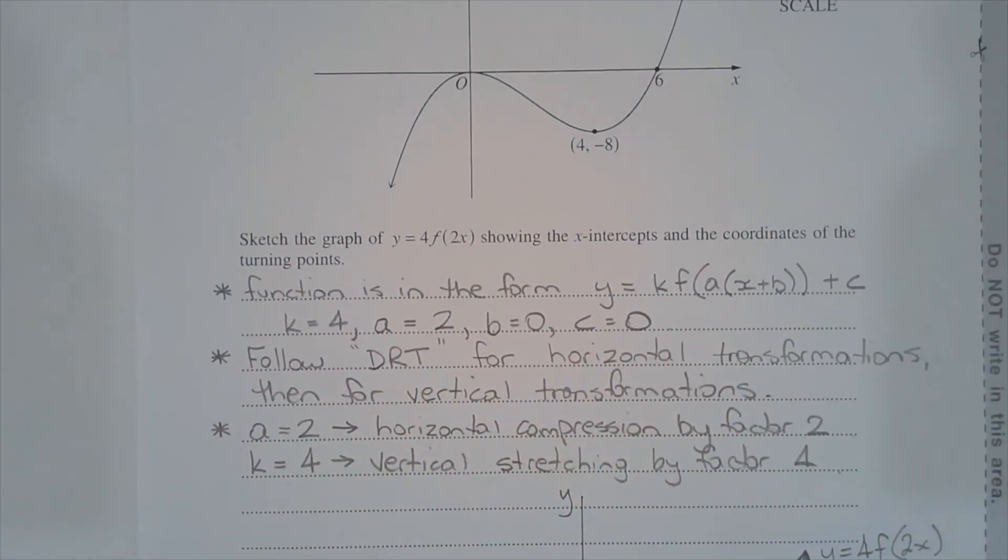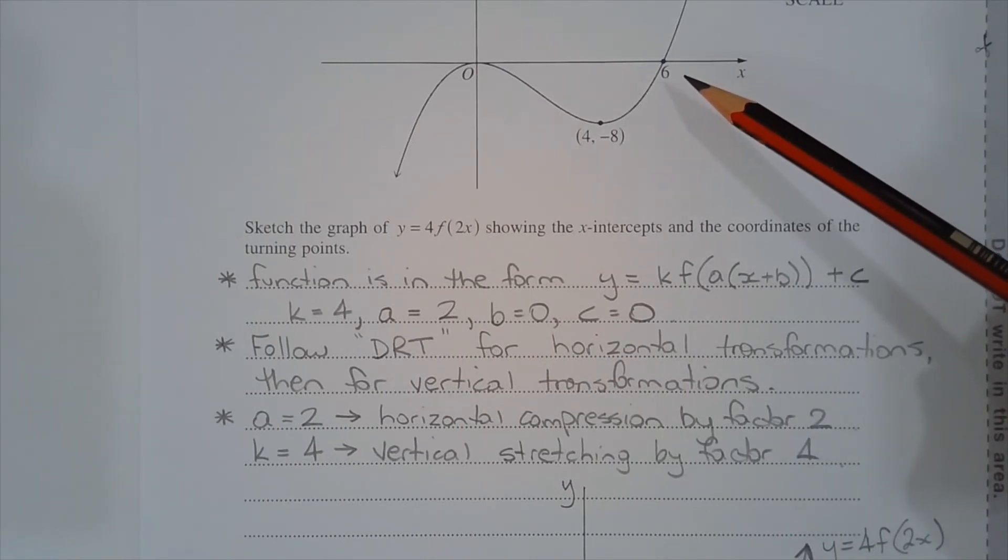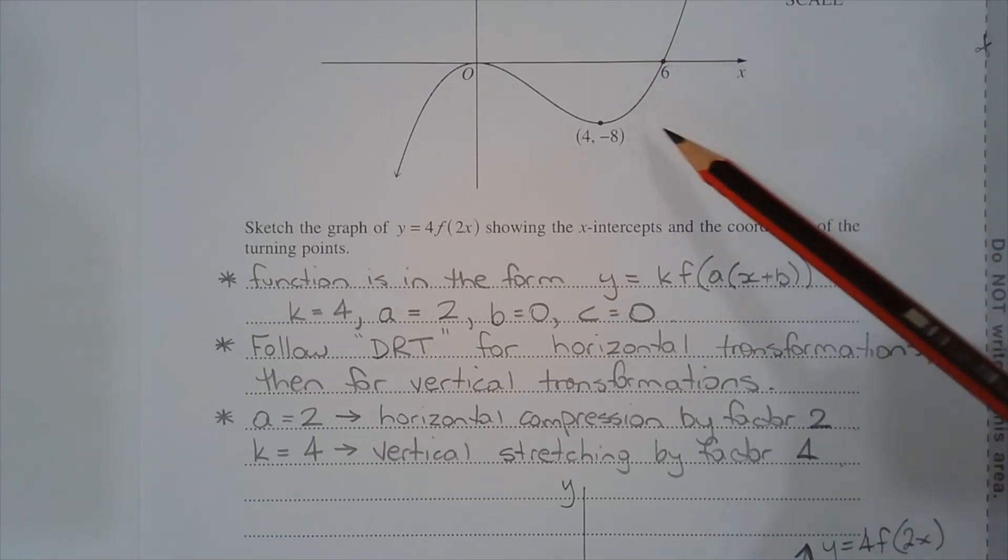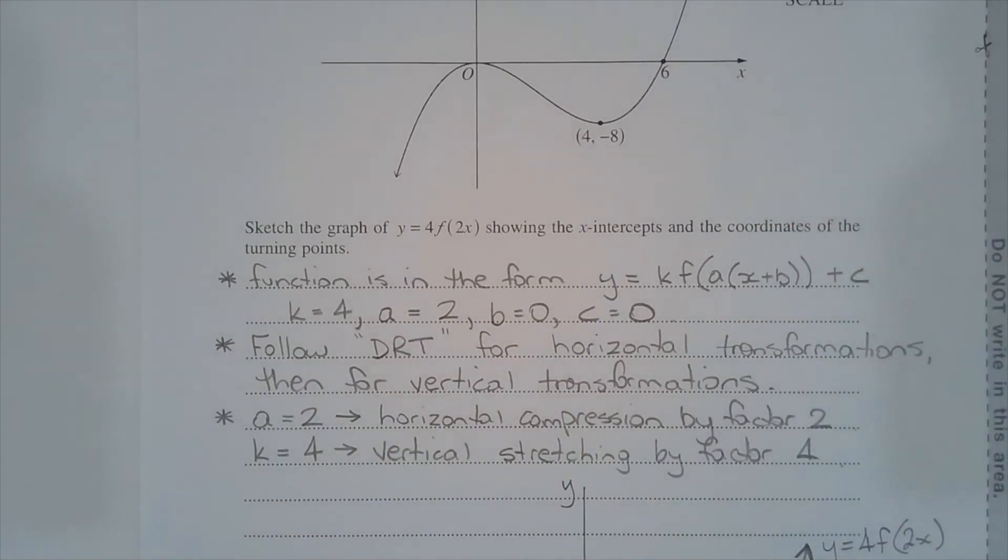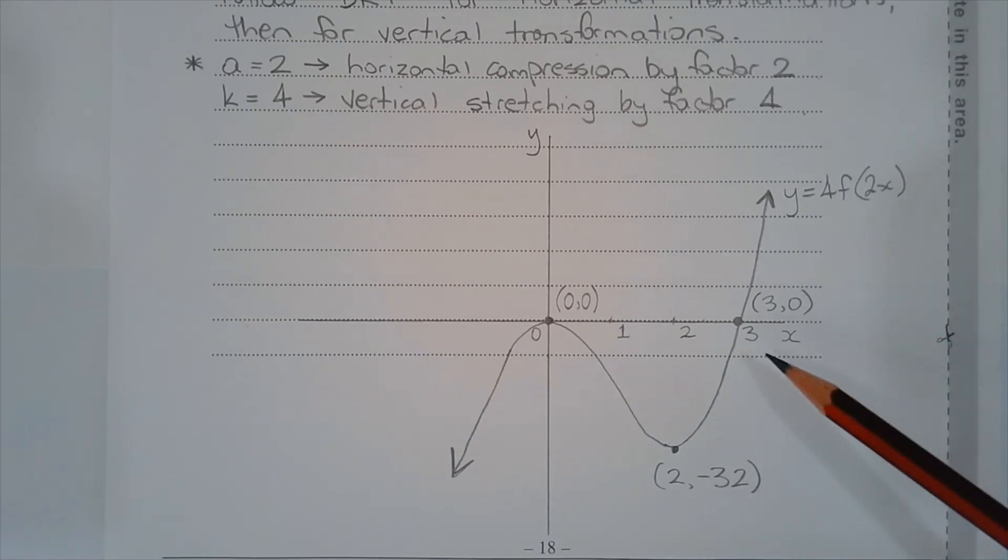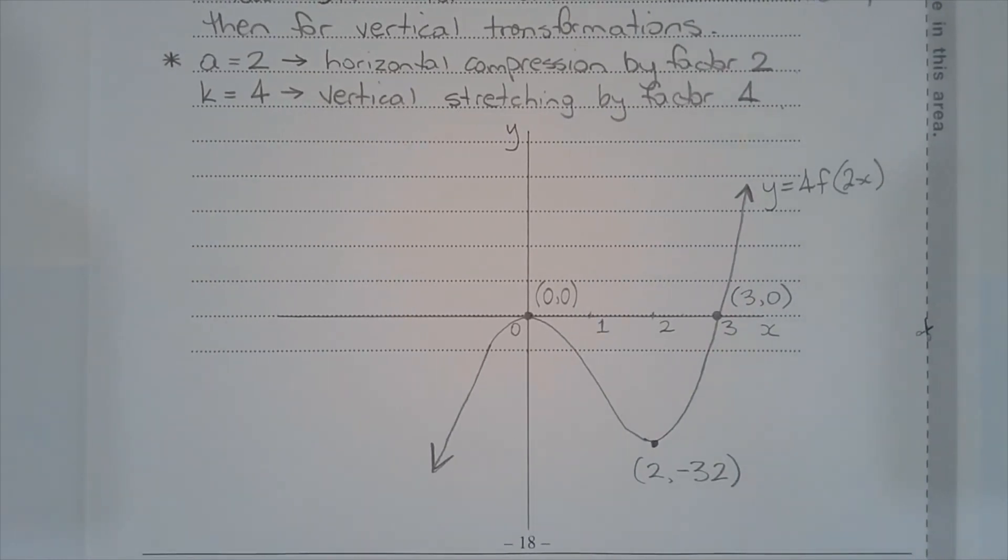And the x-intercept of 6, its y-coordinate is 0, so there's no vertical dilation there, obviously. But the x-coordinate, or the x-intercept, is divided by 2. So we end up with an x-intercept of 3 in the transformed curve.